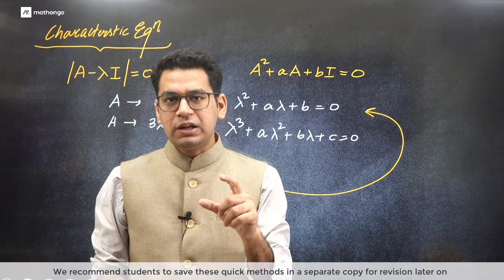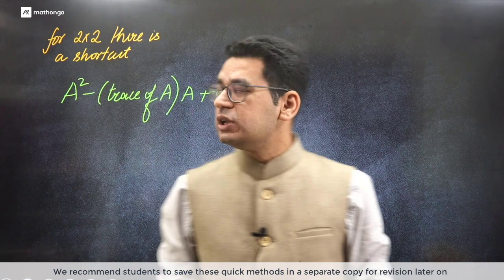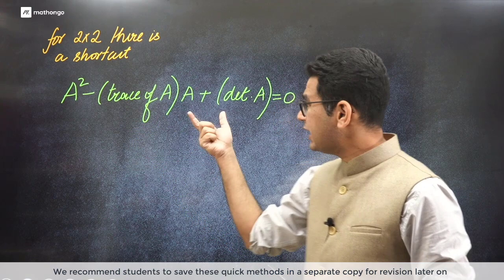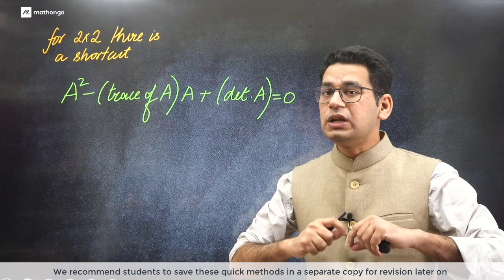Now, my target would be to teach you a quick method of solving this, especially for a 2 cross 2 matrix. So if you have a 2 cross 2 matrix, then the characteristic equation would be A square minus trace of A times A plus determinant of A times I. So if you know this, it is going to be really, really quick.